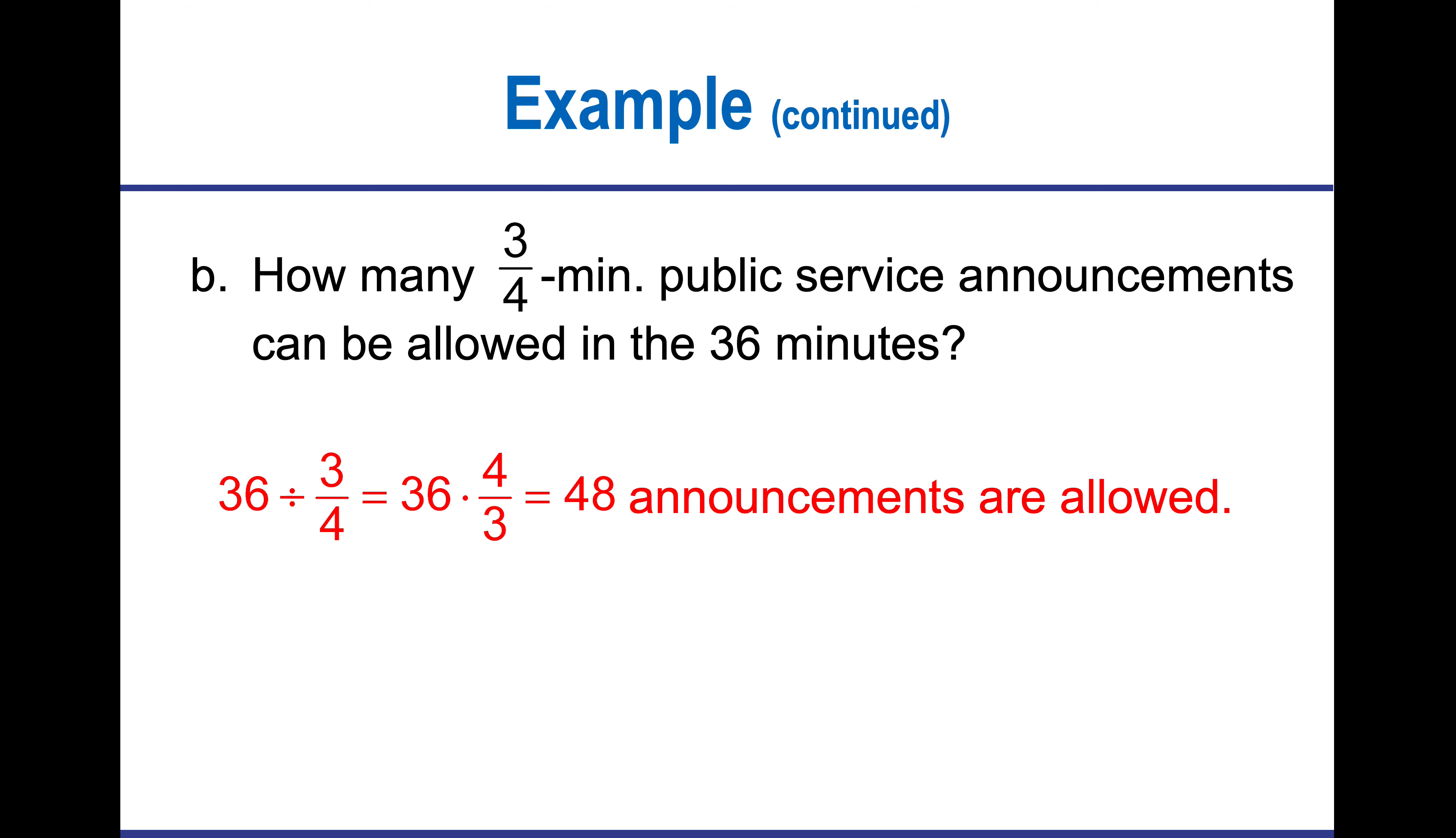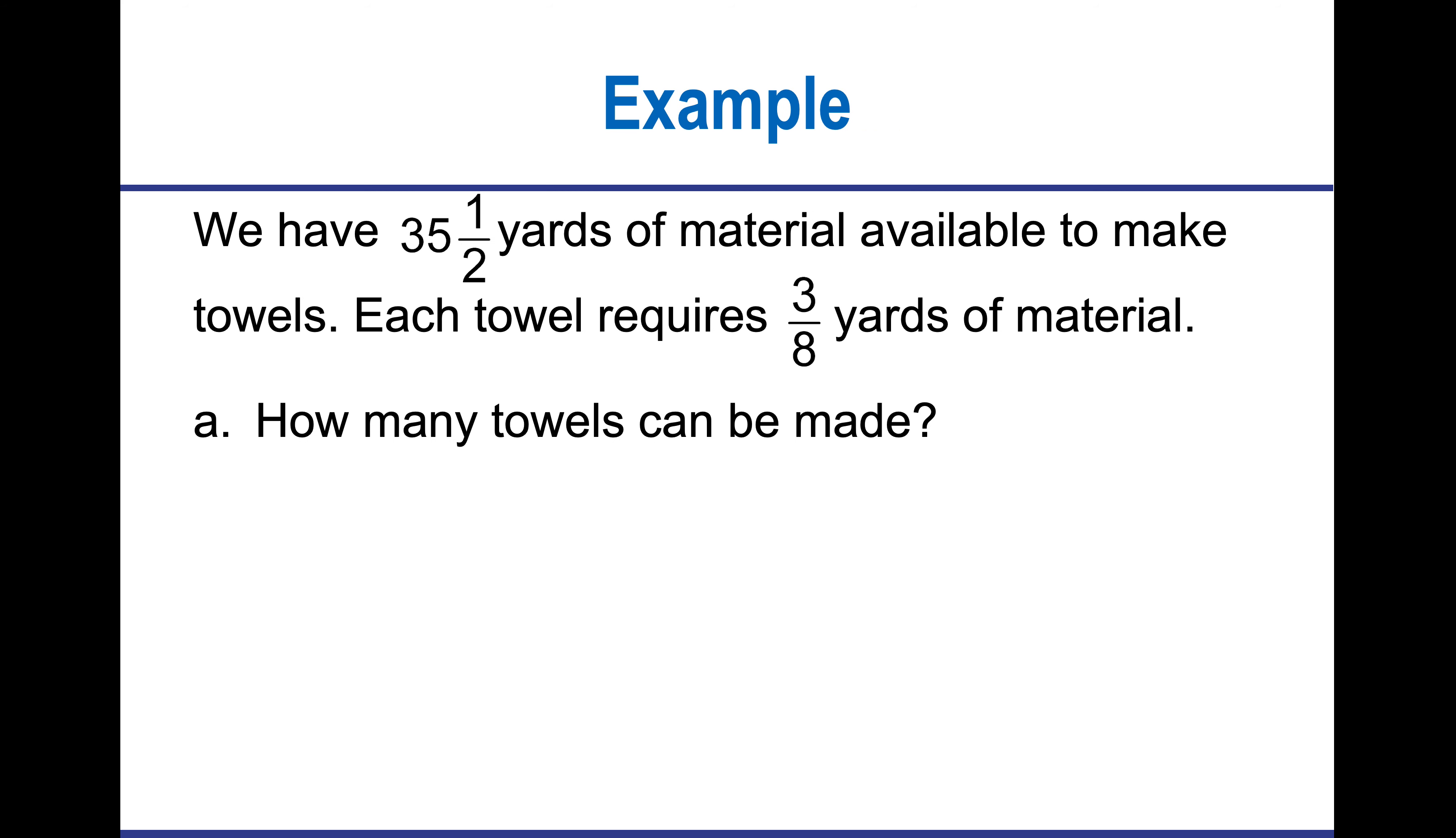In a way, it's almost that division is not defined with fractions, because we're converting that division into multiplication. Here's another example. I'm going to have 35 and 1 half divided by 3 eighths. First I need to get to the improper fraction. Once I have the improper fraction, I will flip 3 eighths to get 8 thirds, multiply straight across, then convert that to a mixed number.